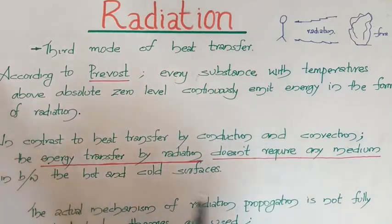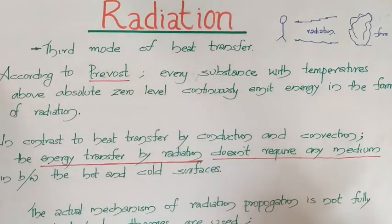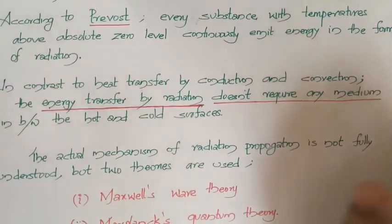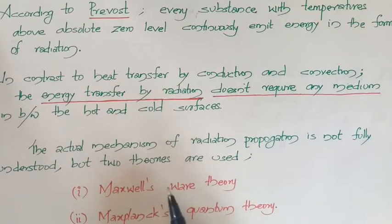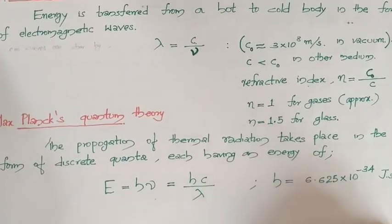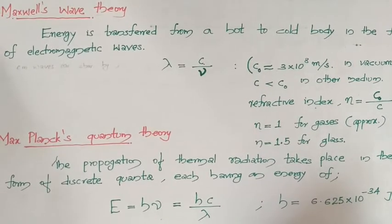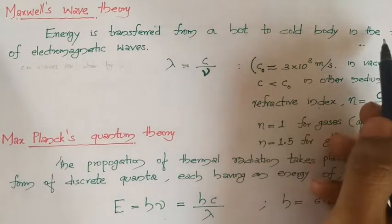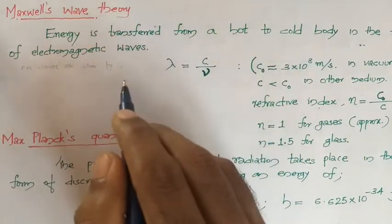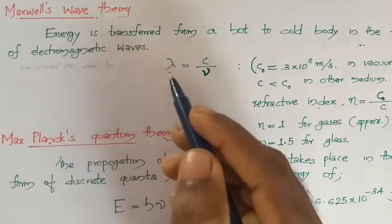The actual mechanism of radiation is not fully understood; however, we use two theories to explain it. One is Maxwell's wave theory and another is Max Planck's quantum theory. According to Maxwell's wave theory, energy is transferred from a hot to a cold body in the form of electromagnetic waves, which are characterized by wavelength, velocity, and frequency.